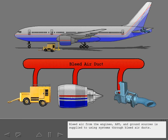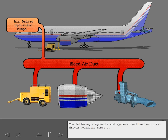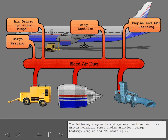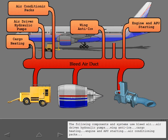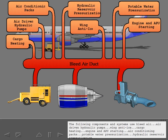Bleed air from the engines, APU, and ground sources is supplied to using systems through bleed air ducts. The following components and systems use bleed air: air-driven hydraulic pumps, wing anti-ice, cargo heating, engine and APU starting, air conditioning packs, potable water pressurization, hydraulic reservoir pressurization, and trim air.